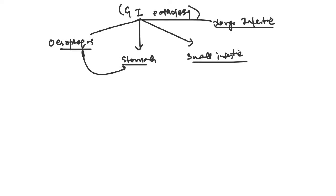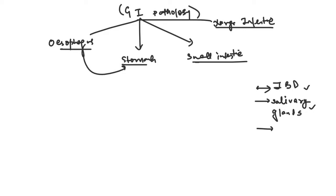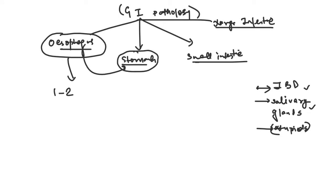After covering those four regions, I'll do another lecture on inflammatory bowel disease, salivary glands — which many students skip but which can appear in exams — and atypical topics like oral ulcers, cleft lip, and cleft palate. The stomach and small intestine may each take one to three lectures; similarly the large intestine.